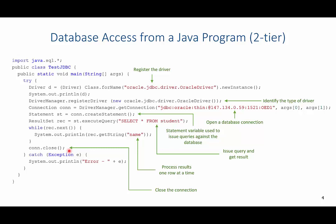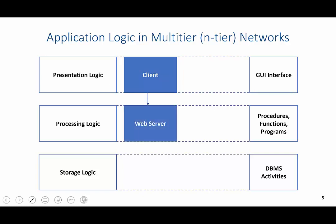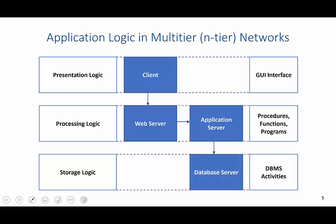We will focus more on n-tier networks and how this is done with PHP and MySQL. In n-tier networks we still have the three types of logic, but instead of two hosts we have multiple hosts. For example, the client could be focused on presentation logic, a web server could handle some processing logic for showing web pages, an application server could also do processing logic — this would be like the PHP program — and then the storage logic would interact with the database server directly, all interconnected.